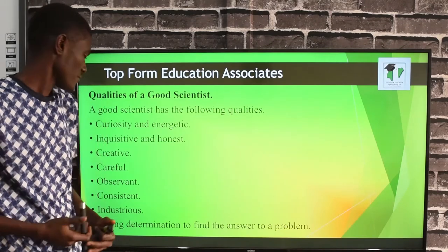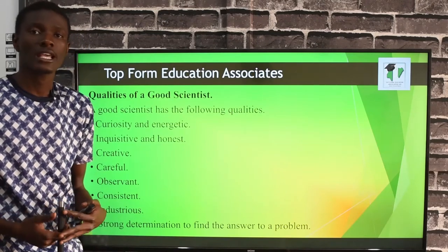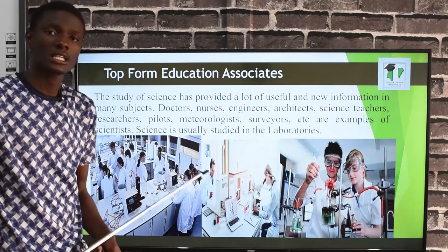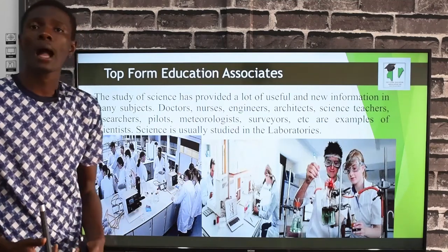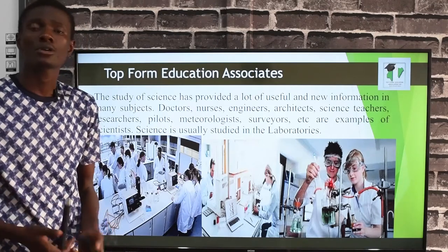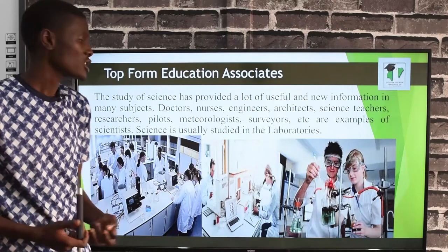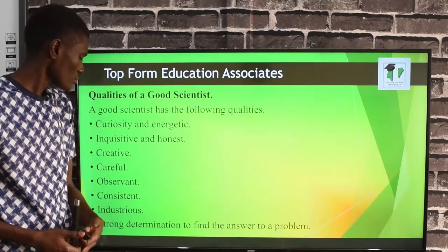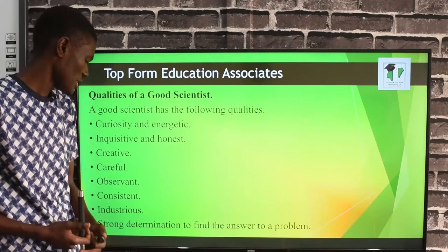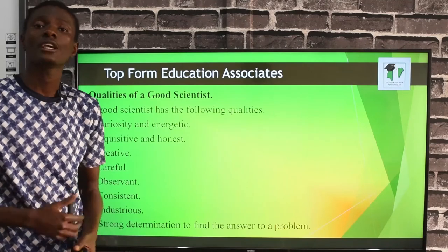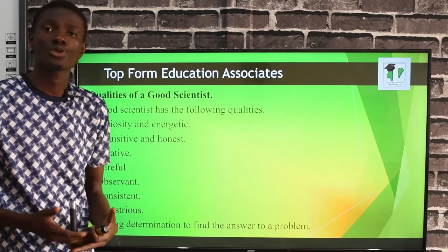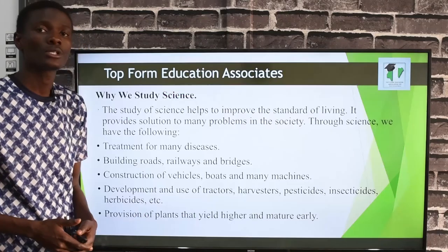Next, you must be careful. As a good scientist you must be careful — there are many breakable apparatus in the laboratory, and if you are not careful you may damage them and cause injury to yourself or others. You must also be observant — observe what you do carefully. Additionally, you must be consistent and industrious, with strong determination to find answers to problems.